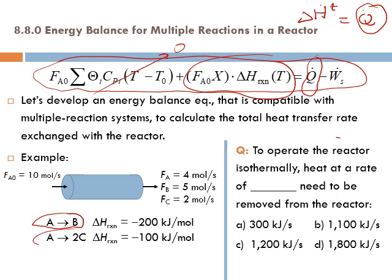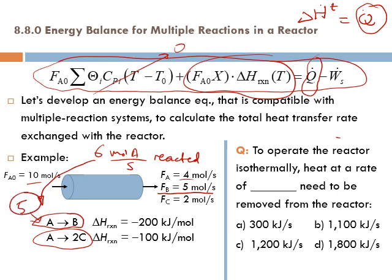For the second reaction, the delta H of reaction is minus 100 kilojoule per mole of A reacted through reaction 2. In total, how many moles of A reacted? We have 10 entering and 4 exiting, so 6 moles of A per second reacted. Through reaction 1, we have 5 moles of B formed, so 5 moles per second of A went through reaction 1. And because the stoichiometry is 1 to 2, 1 mole per second of A went through the second reaction.